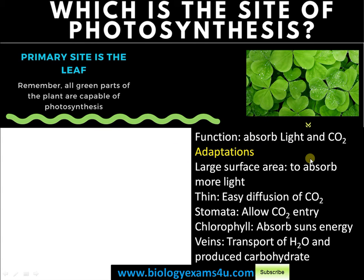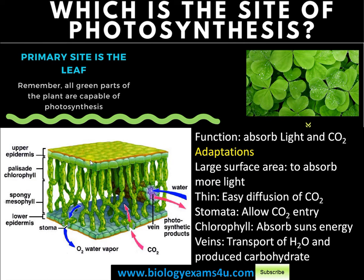The function of the leaf is to absorb light energy and carbon dioxide. Adaptations of the leaf include a large surface area to absorb more light, a very thin structure so that diffusion of carbon dioxide is easy and the distance traveled is short, stomata that allow carbon dioxide entry and removal of water vapor by transpiration, and vasculature that allows translocation of water from root to the site of photosynthesis.